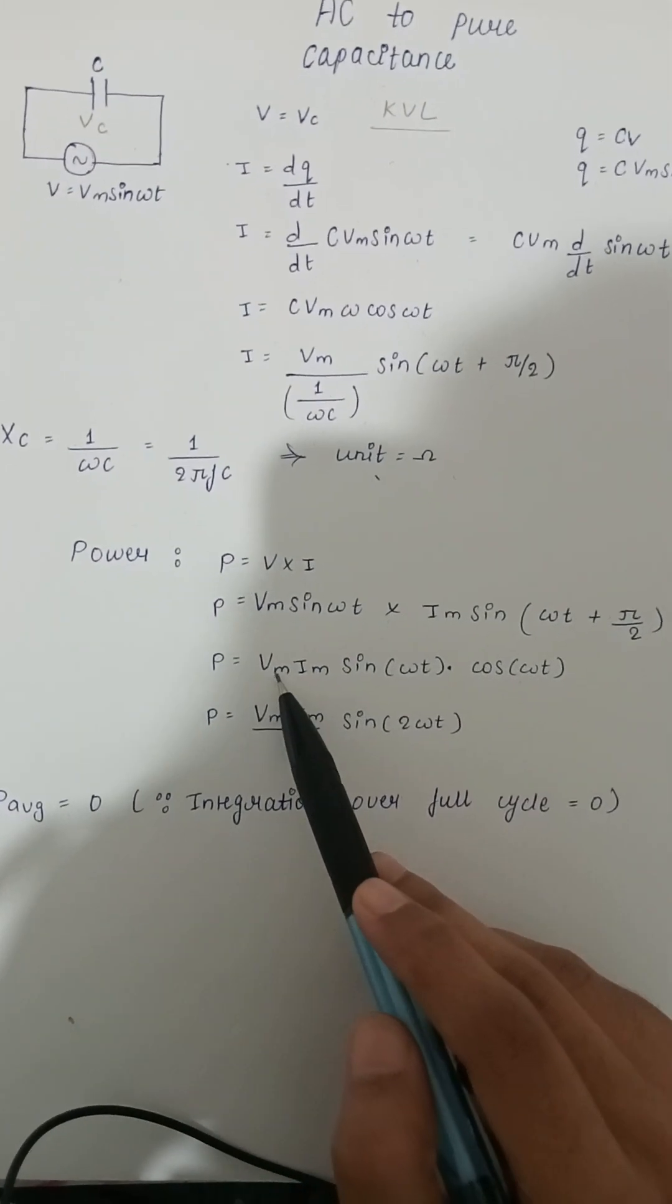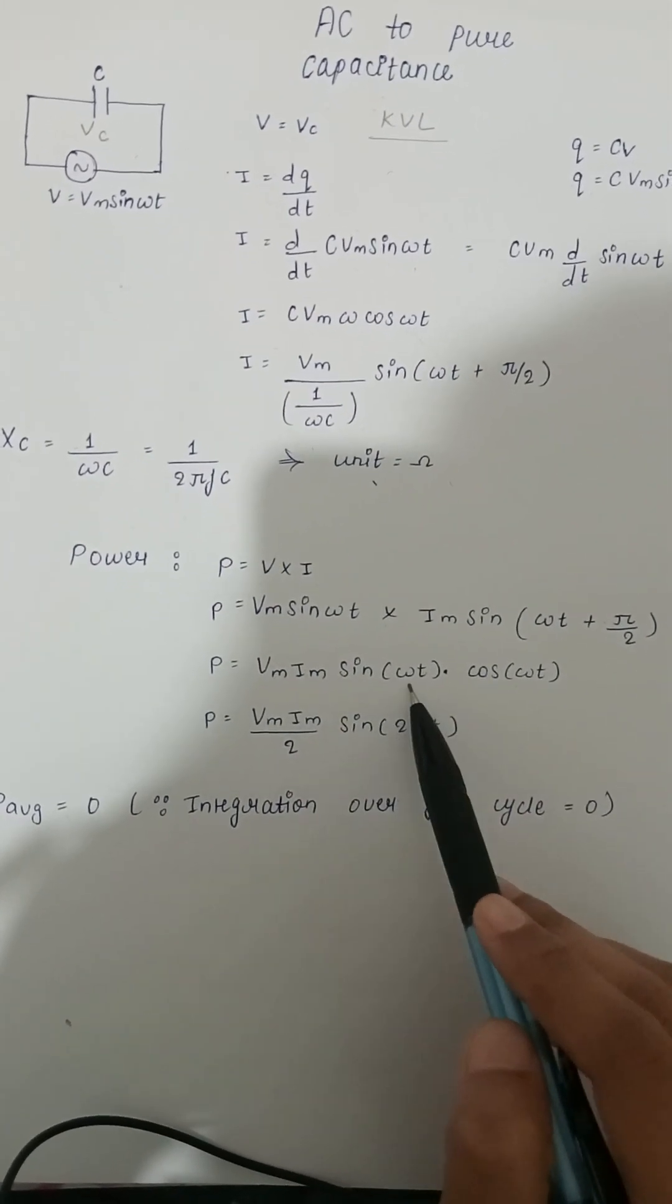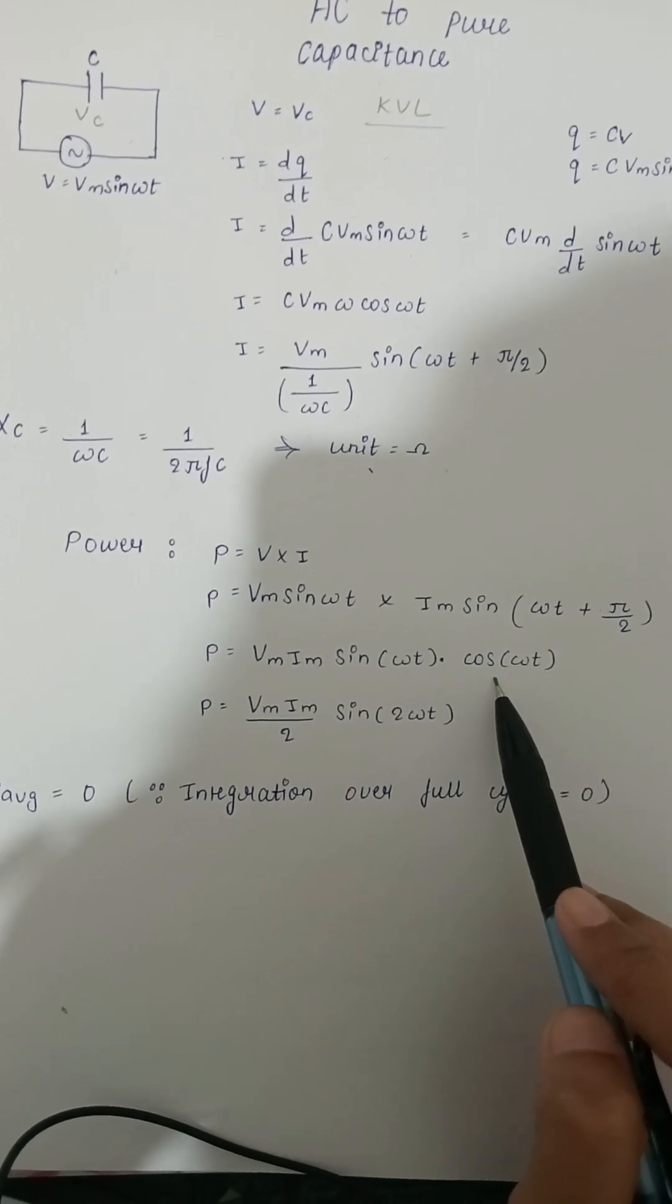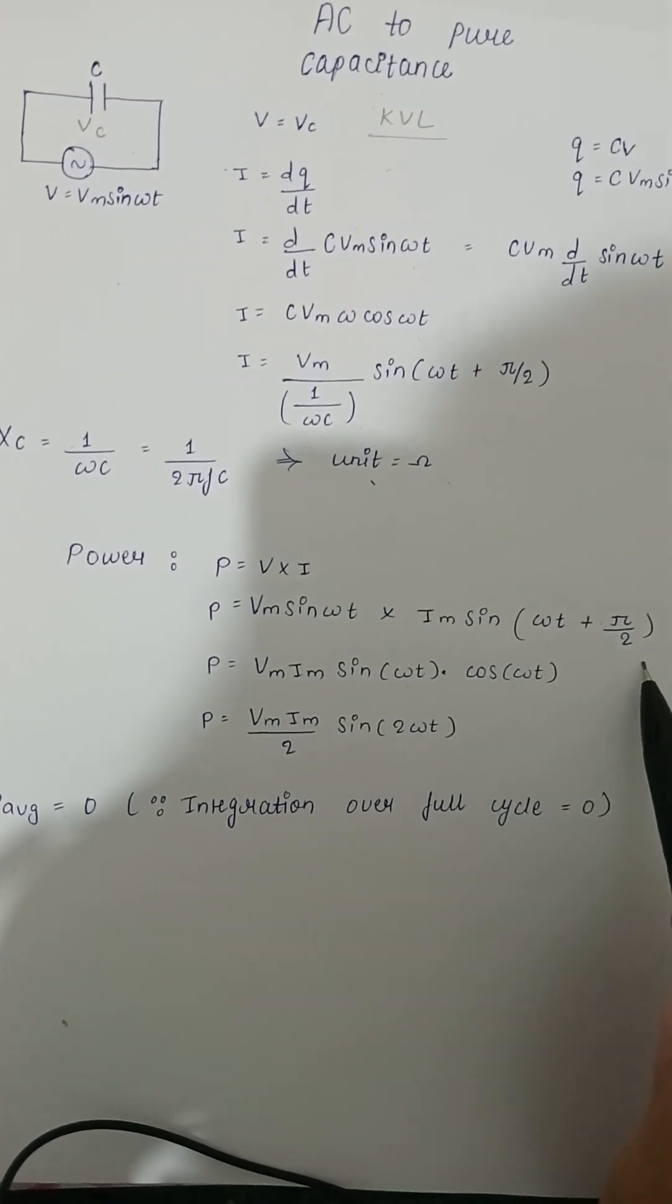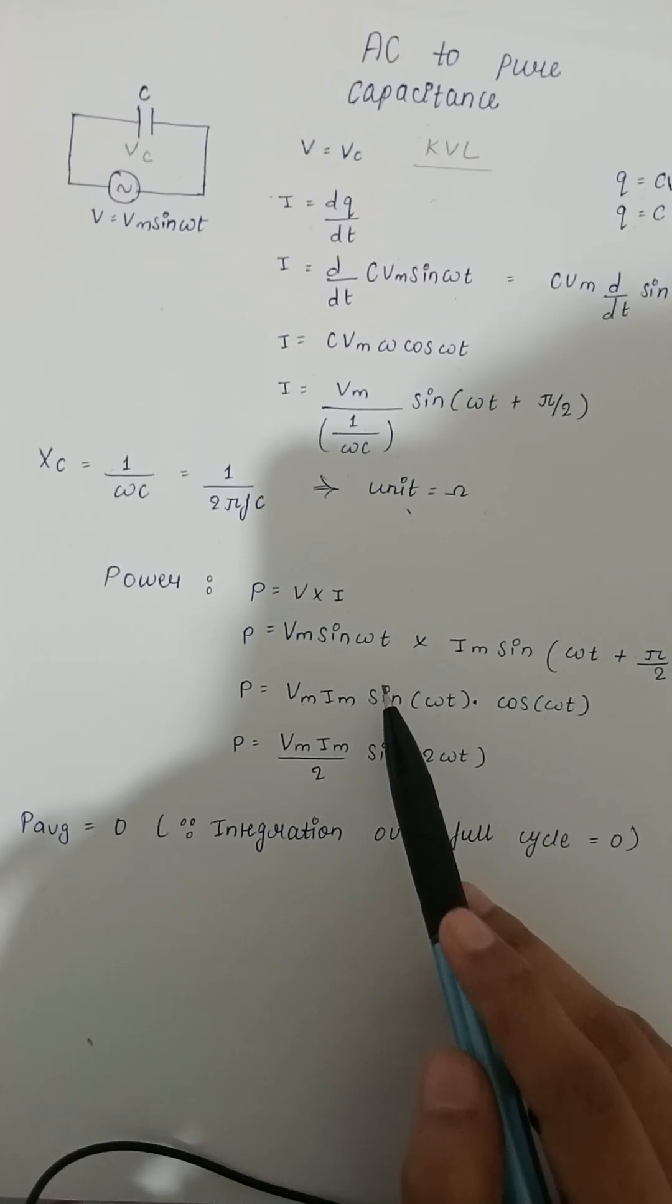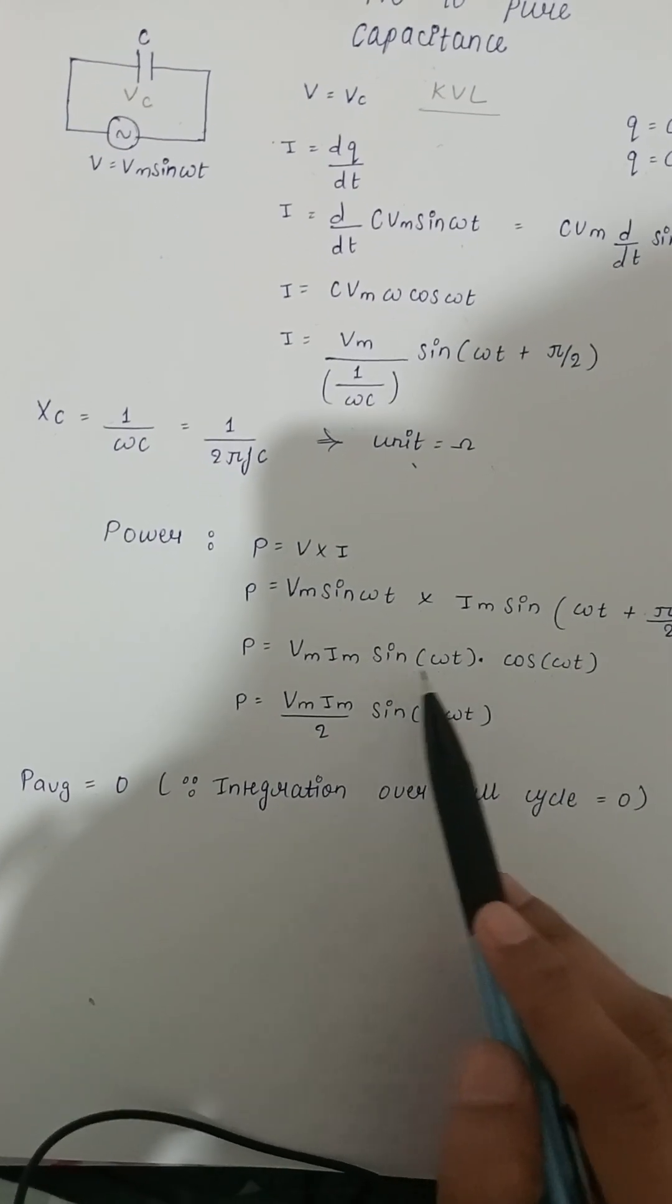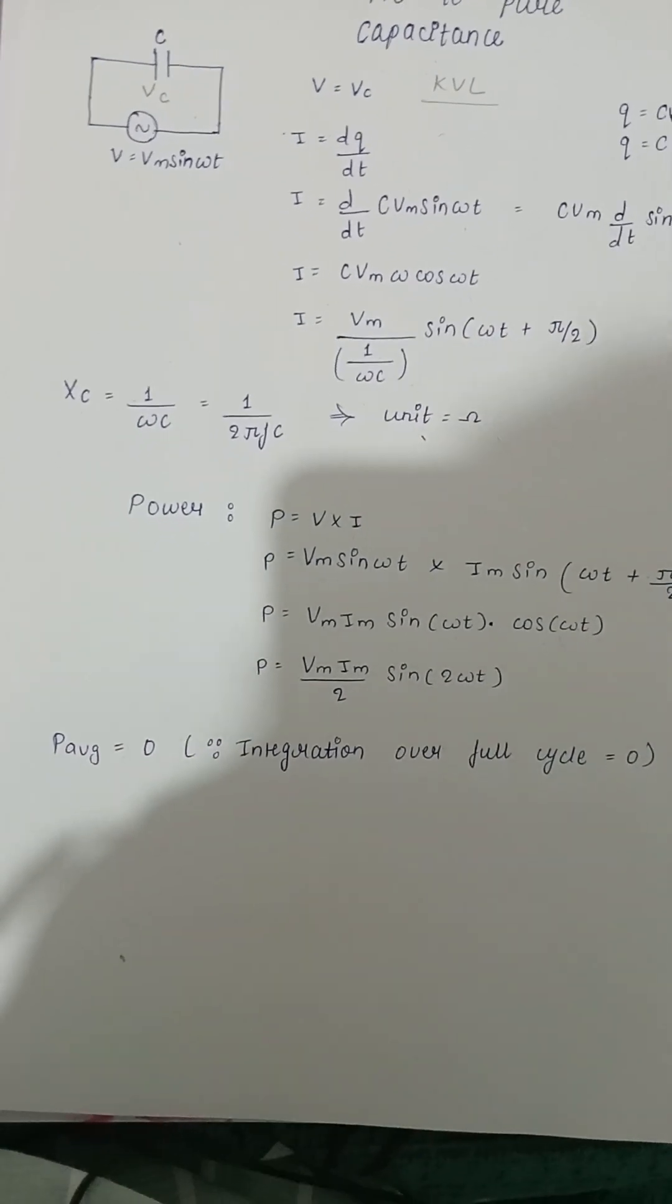So power becomes Vm Im sine omega t into cos omega t, because sine omega t plus 90 degree is equals to cos omega t. So P becomes Vm Im by 2 into sine 2 omega t.